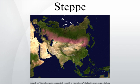In physical geography, a steppe is an eco-region in the montane grasslands and shrublands, and temperate grasslands, savannas, and shrublands biomes, characterized by grassland plains without trees apart from those near rivers and lakes. The prairie is an example of a steppe, though it is not usually called such.